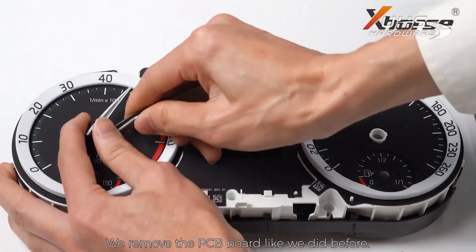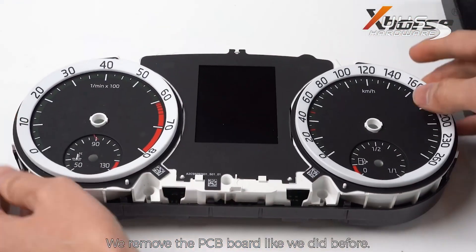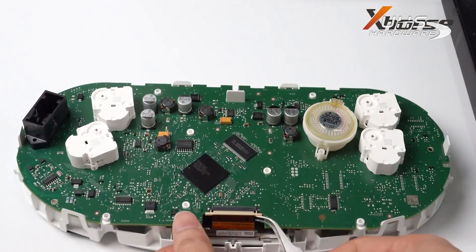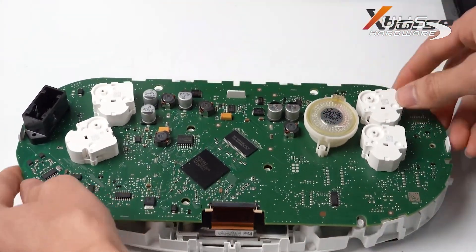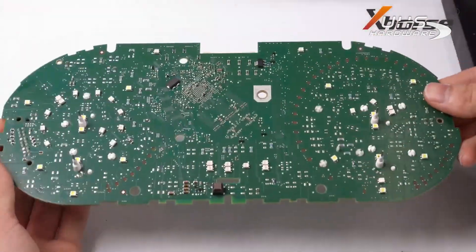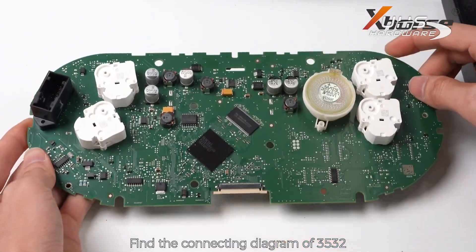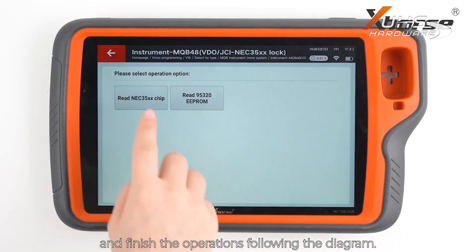We remove the PCB board like we did before. Find the connecting diagram of 3532 and finish the operations following the diagram.